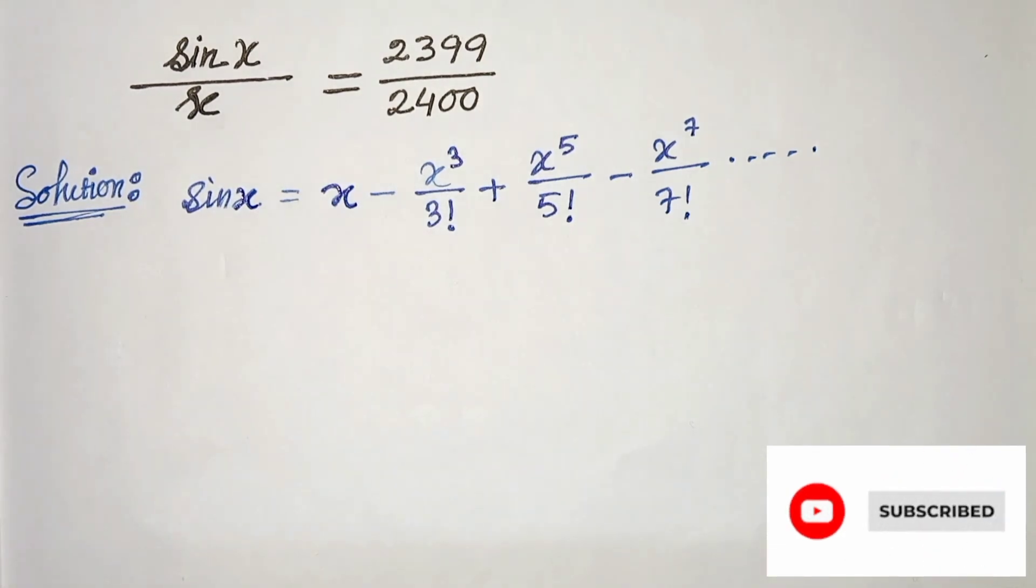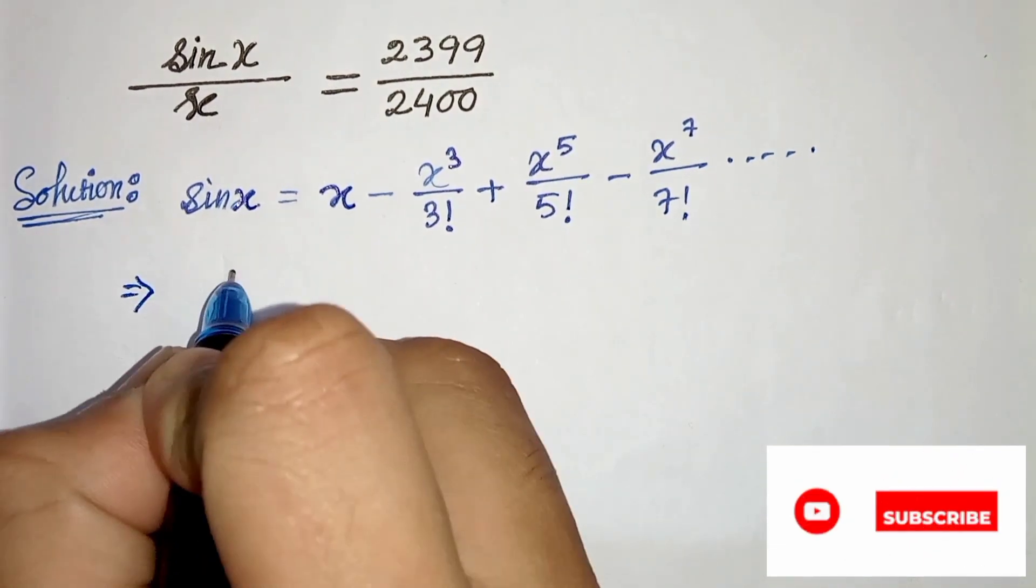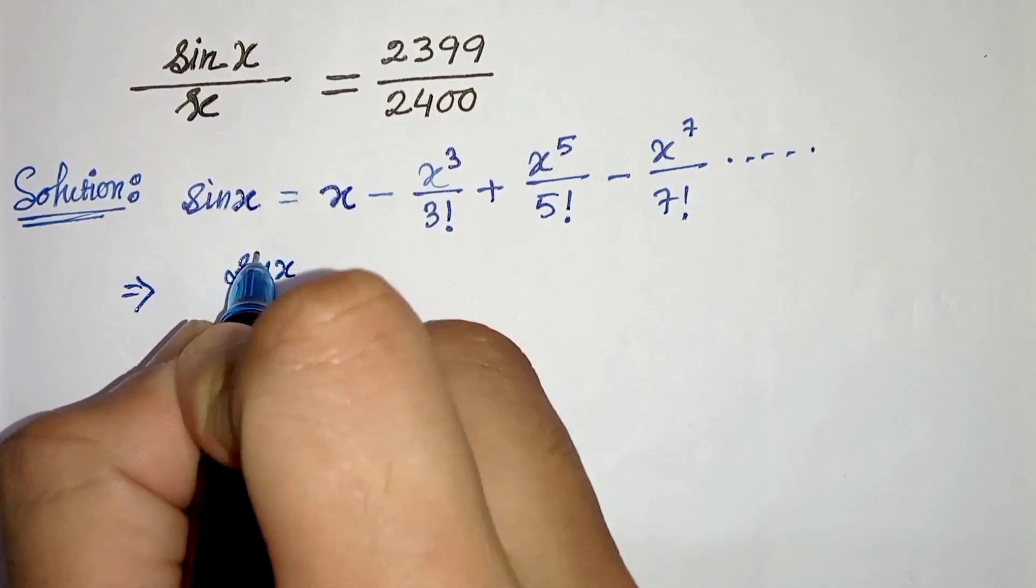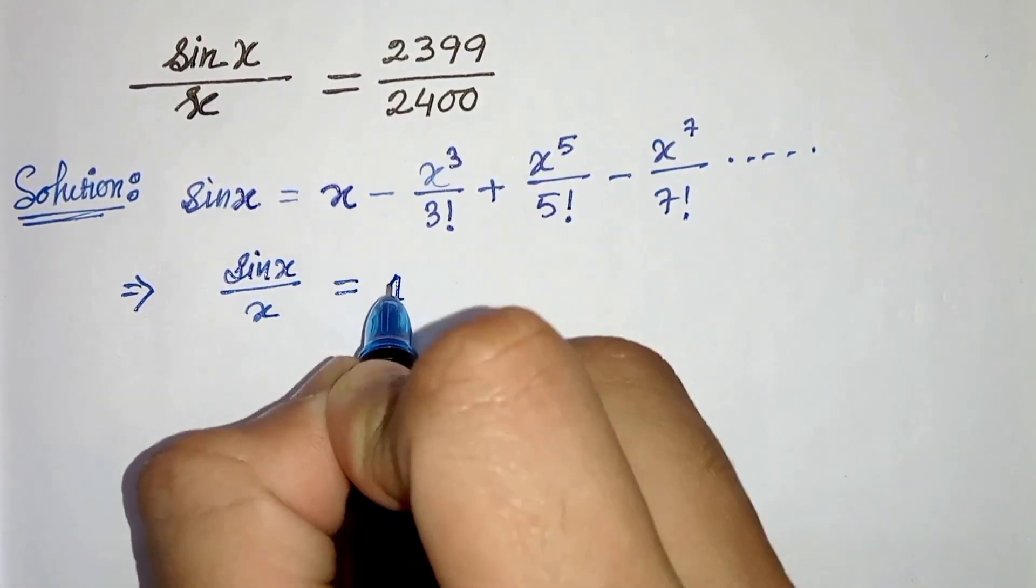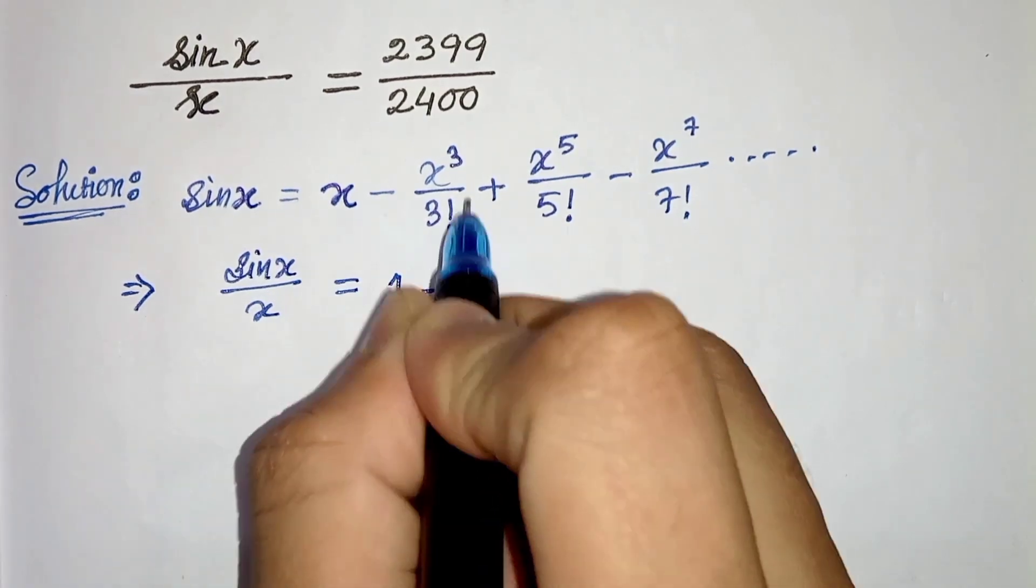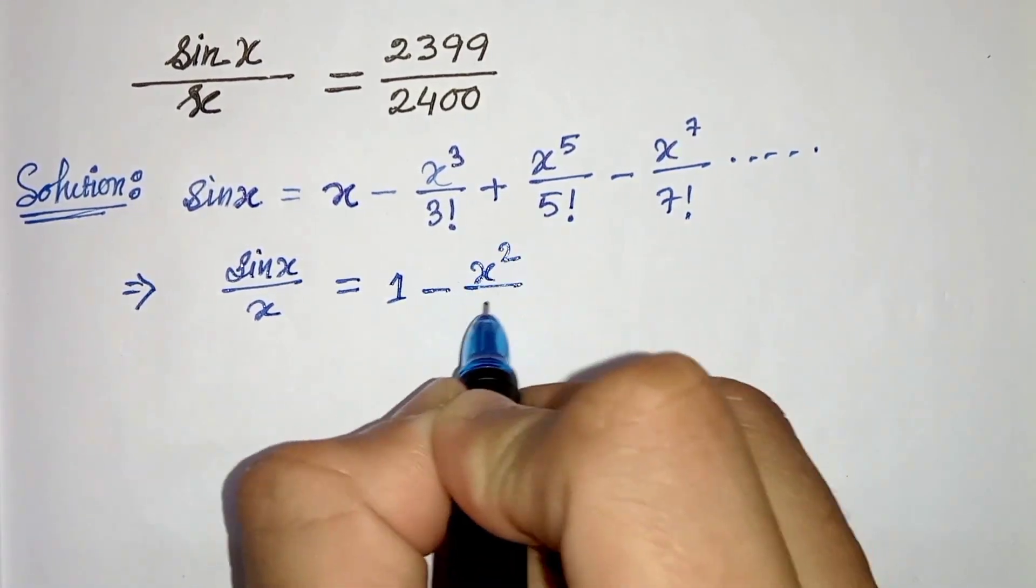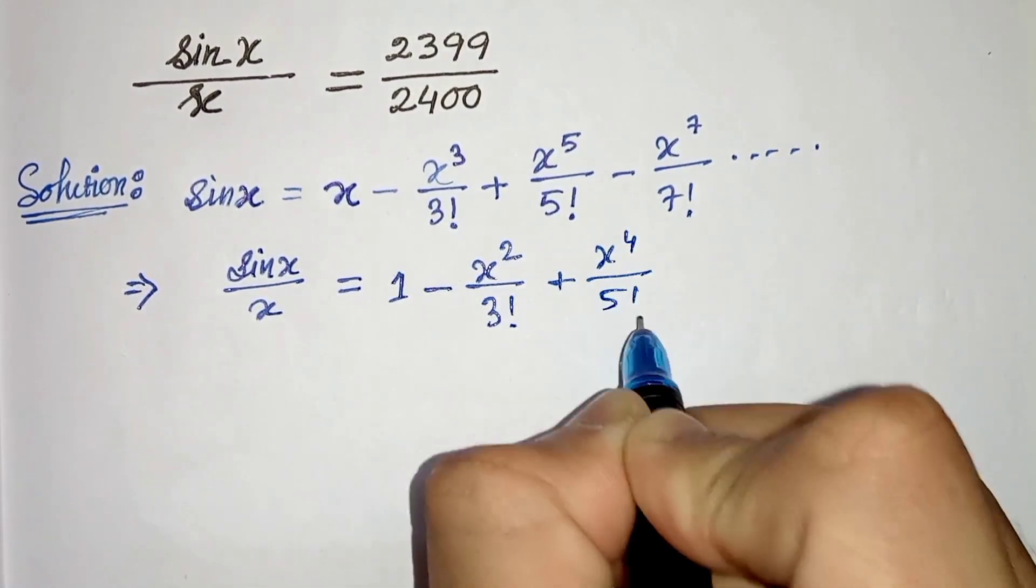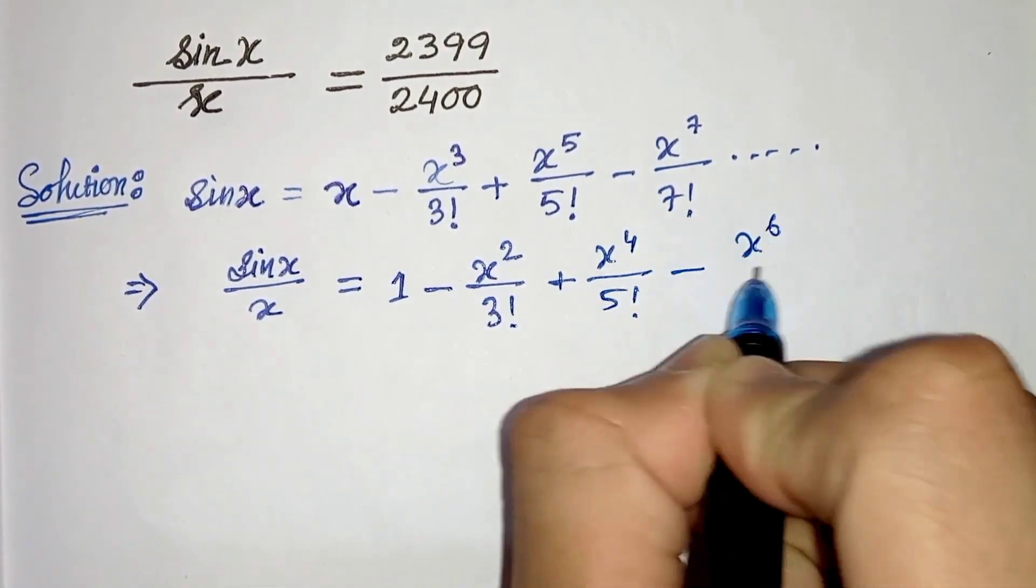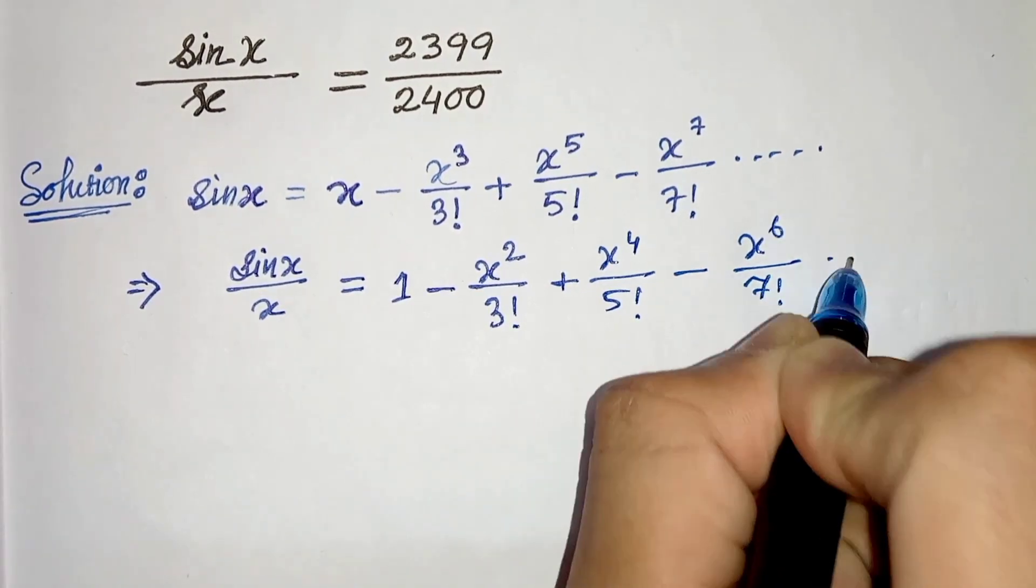Now we will divide both sides by x. So we will get sin x divided by x, and on the right hand side we will get x divided by x is 1 minus x squared by 3 factorial plus x to the power 4 divided by 5 factorial minus x to the power 6 divided by 7 factorial and so on.